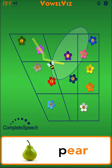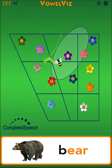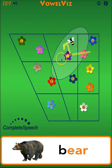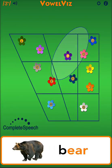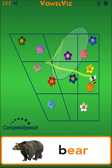The ER vocalic R is a transition from the mid-front E to ER. Air, pear, bear. Misarticulations look pretty much the same as they do for EAR, and they go through the target range to the right side of the screen. Aile, pale, bale.